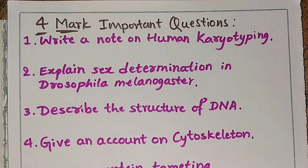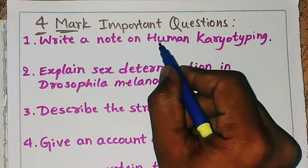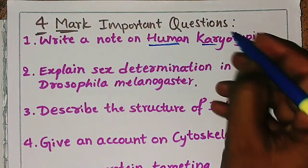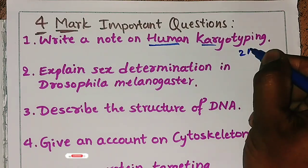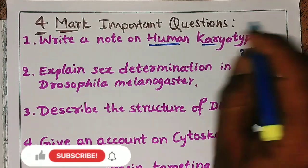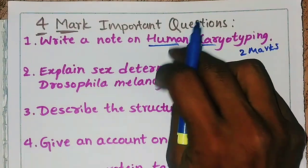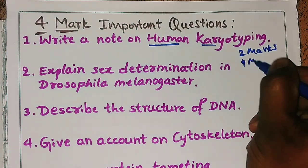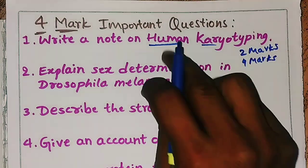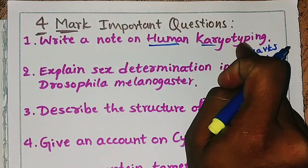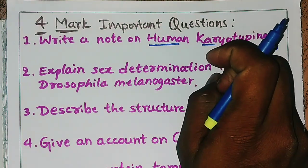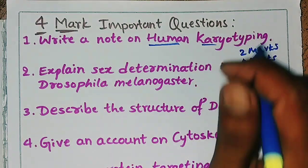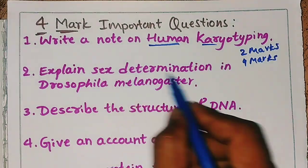The first important four-mark question is: write a note on human karyotyping. This question may also be asked as a two-mark question, so be prepared for it. You need to cover what human karyotyping is, its significance, and related aspects.